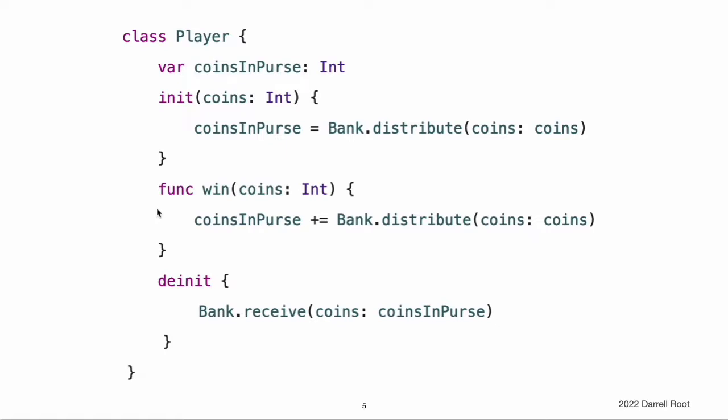The Player class also implements a deinitializer, which is called just before a Player instance is deallocated. Here, the deinitializer simply returns all of the player's coins to the bank.